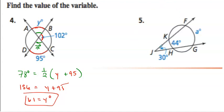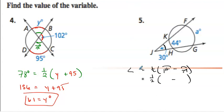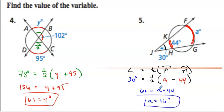Next one, number five: we've got an exterior angle, so we use the difference of two arcs. The angle is 30. Multiplying by two gives 60 equals a minus 44, so a equals 104 degrees. Keep it easy.